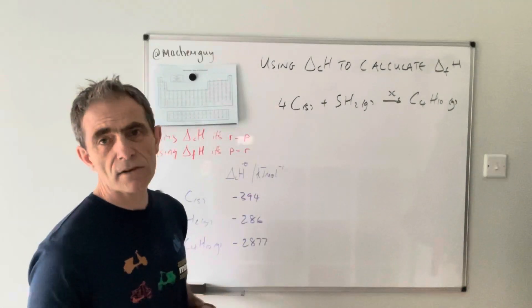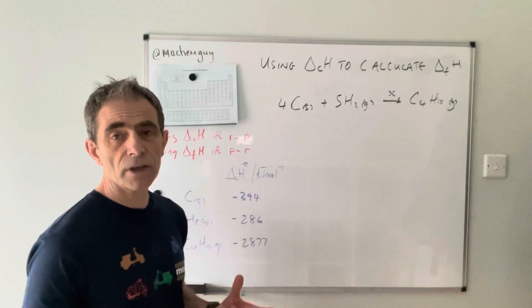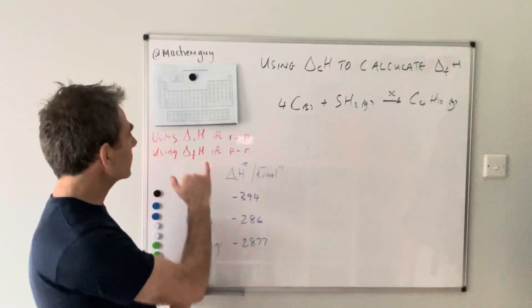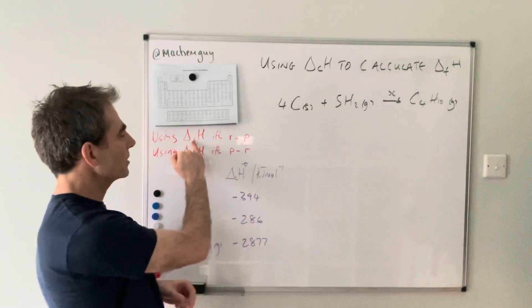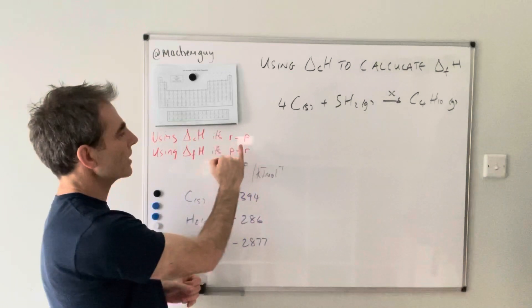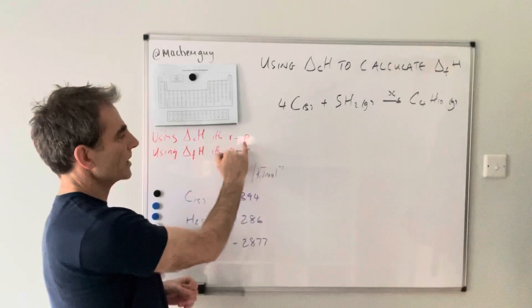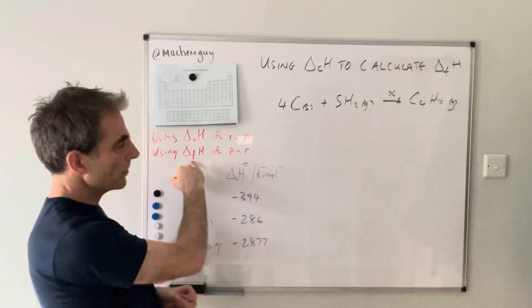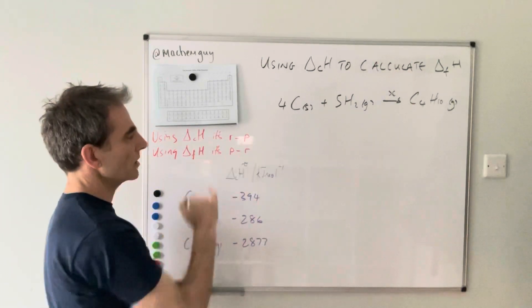We're all familiar with Hess's Law formulas we can use to calculate enthalpy changes. When you've got enthalpy changes of combustion, you can do the sum of the enthalpy changes of combustion of the reactants minus the products. If you've got enthalpy changes of formation, it's the other way around: products minus reactants.